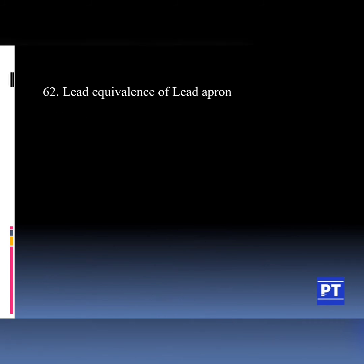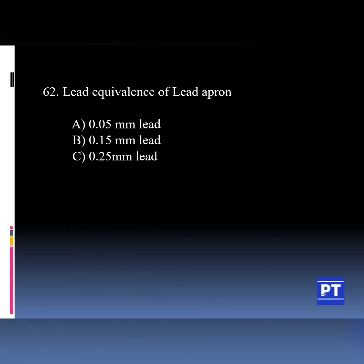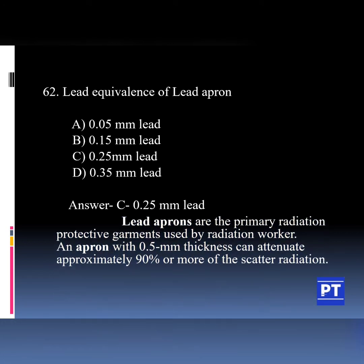Question number 62: Lead equivalence of a lead apron. Option A 0.05 mm lead, Option B 0.15 mm lead, Option C 0.25 mm lead, Option D 0.35 mm lead. Lead aprons are the primary radiation protective garments used by radiation workers. An apron with 0.5 mm thickness can attenuate approximately 90% or more of scatter radiation.